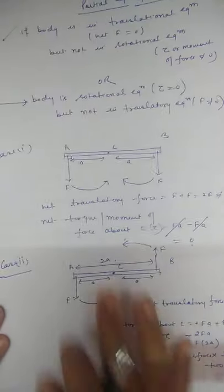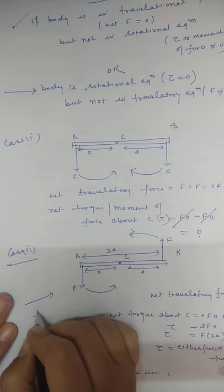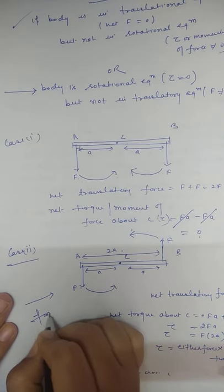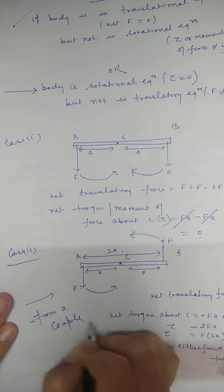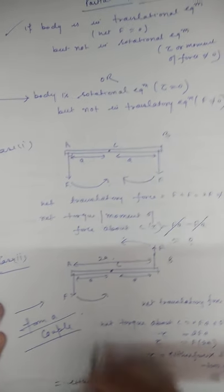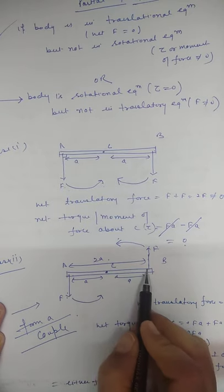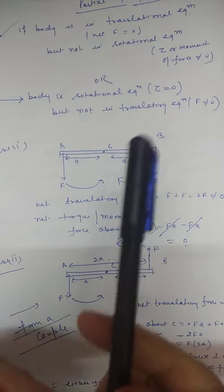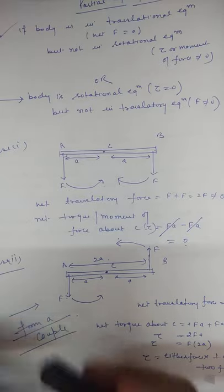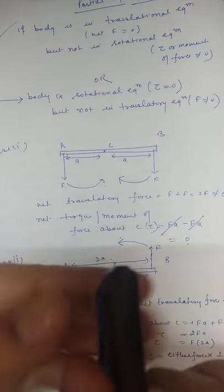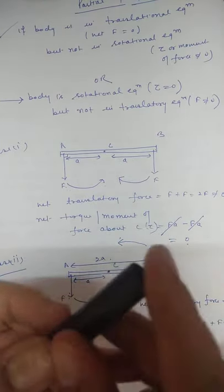This situation is called a couple. A special name is given to this: it is said to form a couple. A couple consists of two equal and opposite forces separated by some distance, with a different line of action. For example, when we open a water tap or open the cap of a water bottle, a couple is formed.